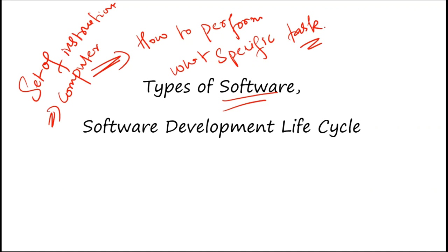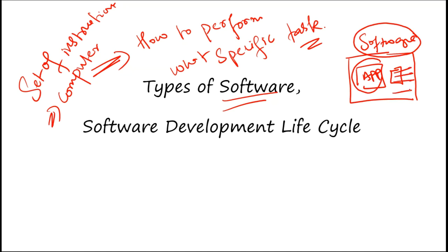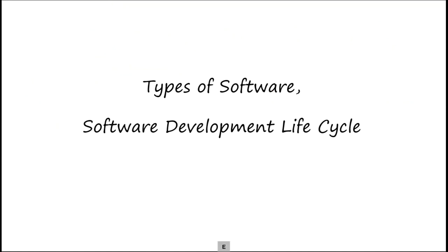Today we'll be dealing with types of software in detail. Every application is part of software, but every software is not an application. In hierarchical form, if this is an app, then software is the larger box containing it. So every app is a software, but every software is not an app. There are certain different aspects other than apps that we'll be studying today.